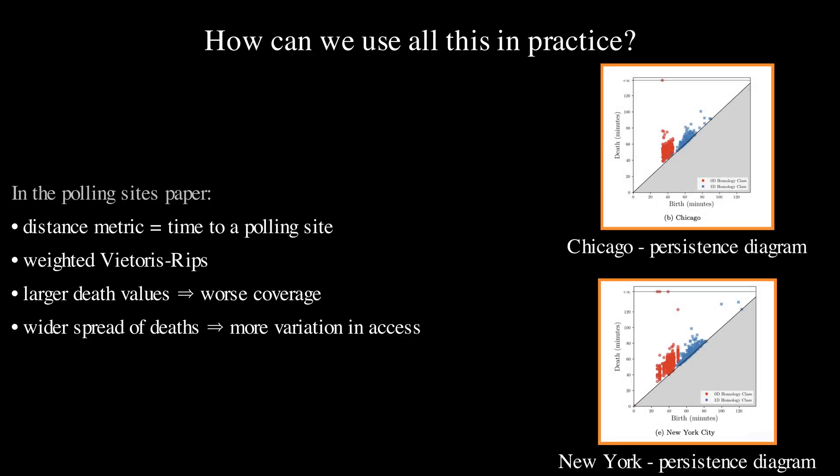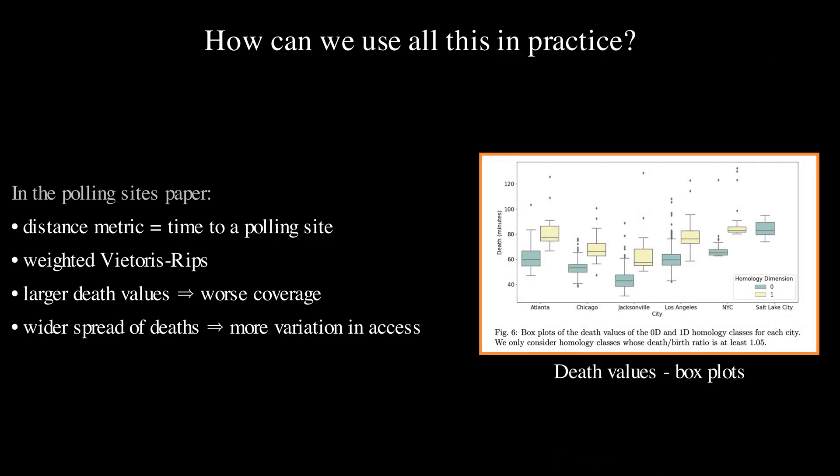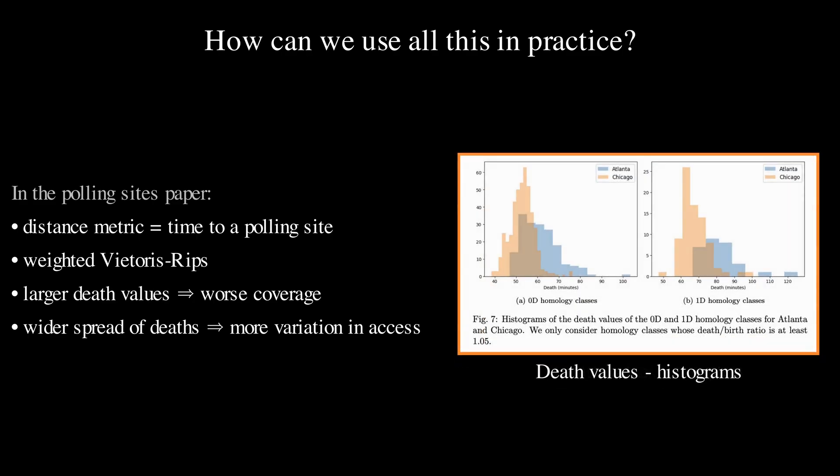In their case, larger homology class death values suggest that a city may have worse coverage and a wider distribution of death values suggest that there may be more variation in polling site accessibility within a city. Some areas, like Chicago, had well-distributed sites, while others, like Los Angeles or New York City, showed inequities due to traffic or long queues. Persistent homology provided a way to detect holes in access, regions where voters were effectively isolated.